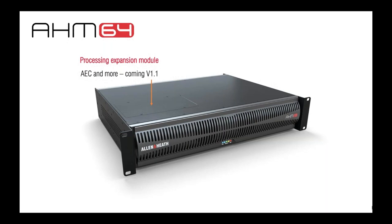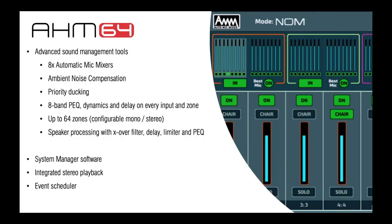Now let's have a look at the features. There are up to eight automatic mic mixers depending on your configuration, meaning you can handle meetings in multiple rooms simultaneously with the same unit. There's noise compensation across all zone outputs, priority ducking, and full processing on every input and output channel: 8-band parametric EQ, dynamics, and delay on every input and zone. There's also a graphic EQ on top of the PEQ for every zone, and up to 64 processing output channels.